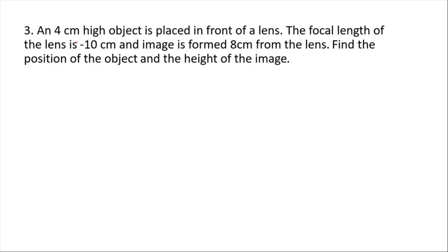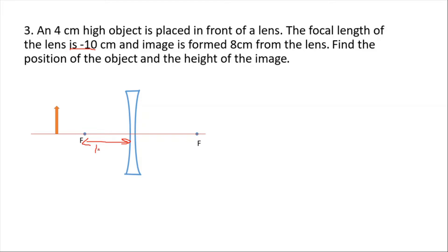A 4 centimeter high object is placed in front of a lens with focal length of negative 10 centimeters, and the image is formed 8 centimeters from the lens. Find the position of the object and height of the image. This is a concave or diverging lens because the focal length is negative. The image is always between the focal point and the lens — a virtual image — given as 8 centimeters.